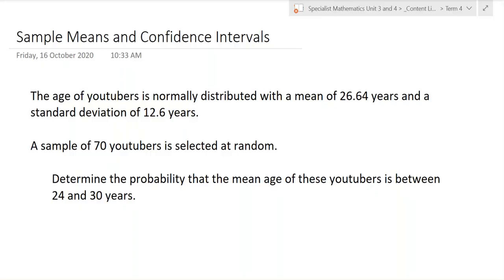So we could think about the age of a YouTuber. According to some articles, the mean is approximately 27. One article said 26.64 years old is the mean YouTuber, in case you didn't know that. And a standard deviation of 12.6 years.